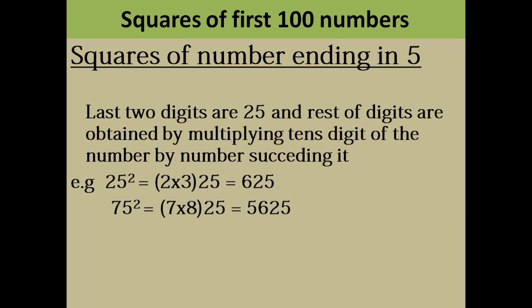So your final answer is 625. Similarly for 75, last digits are 25. The rest of the digits: 7 multiplied by the number succeeding it, that is 8. 7 into 8 is 56, so 5625. Similarly for 95 square: 9 into 10.